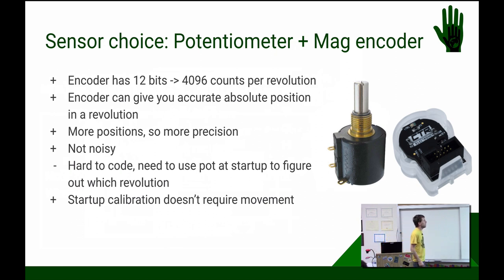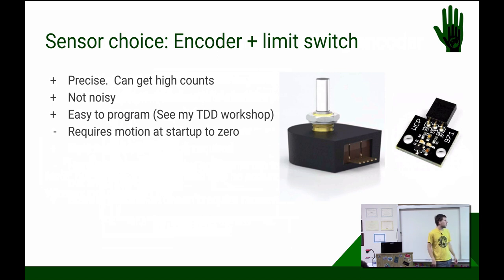And then another classic combo is you grab a limit switch of some sort. We like to use contactless sensors, so we'll use a magnet and a Hall effect, and you slowly move your elevator down until you hit the limit, and then that tells you where zero is on your encoder, capture that value, and now you can know your distance. So you can get really high counts, you can be very precise, low noise, but you have to move your system. And for when you get to more and more DOFs, like some of our arms, it can be very hard to move to the limits without running into something.